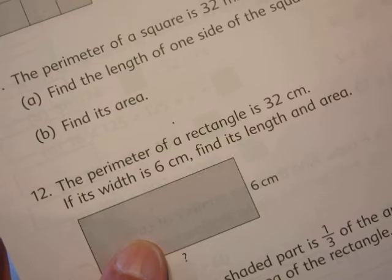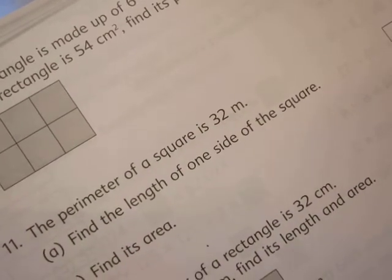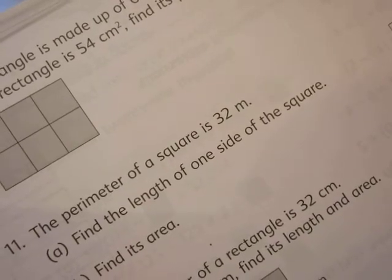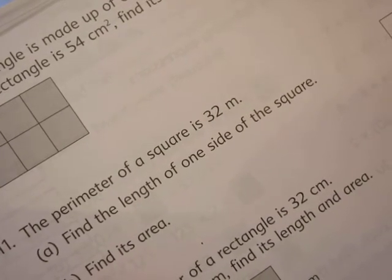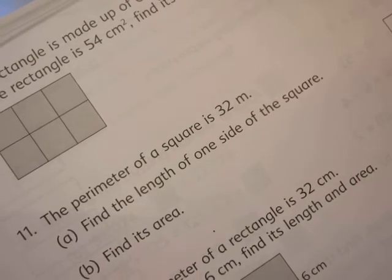The perimeter of a square is 32 meters. Find the length of one side of the square and find its area.